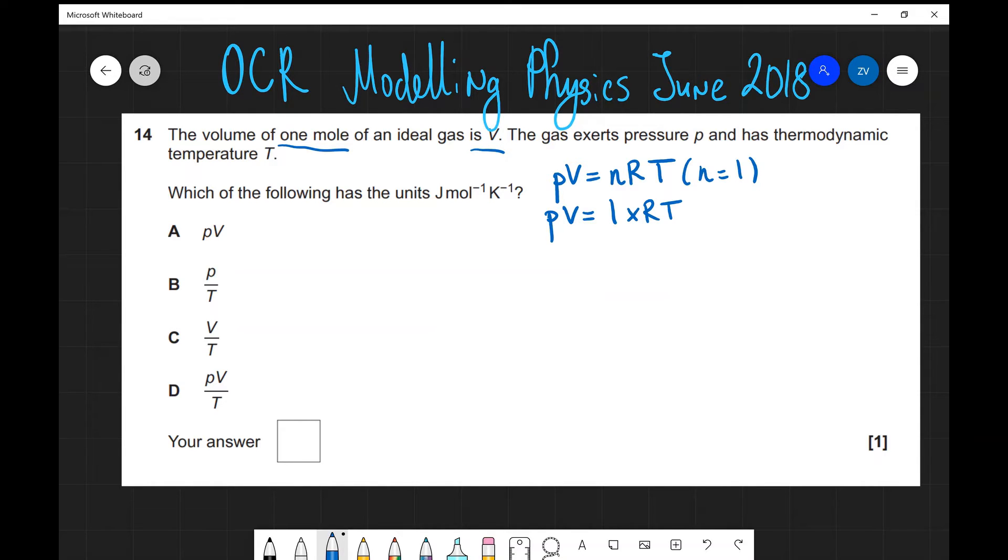The question is asking us which of the following has the units joules per mole per Kelvin. That's the gas constant R. Because if I want to find the base units of R, I need to divide by the temperature, which is measured in Kelvin. So I get my factor of K to the power of minus one. R will be, rearranging, PV divided by one mole and divided by the temperature.